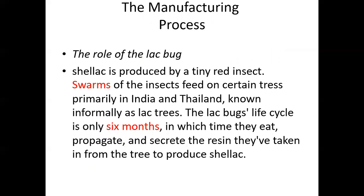Regarding the manufacturing process: shellac is produced by a tiny red insect. Swarms of insects feed on certain trees, primarily in India and Thailand, known informally as lac trees. There are thousands of these insects in a swarm. The lac bug's life cycle is only six months, during which they eat, propagate, and secrete the resinous material taken from the tree to produce shellac.